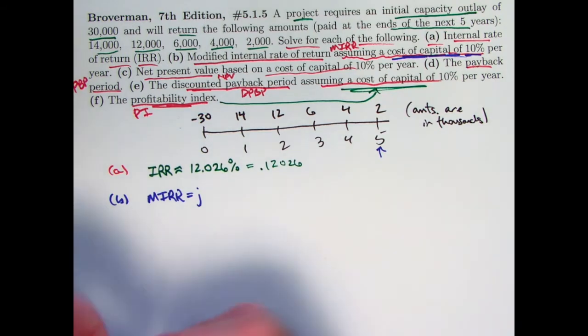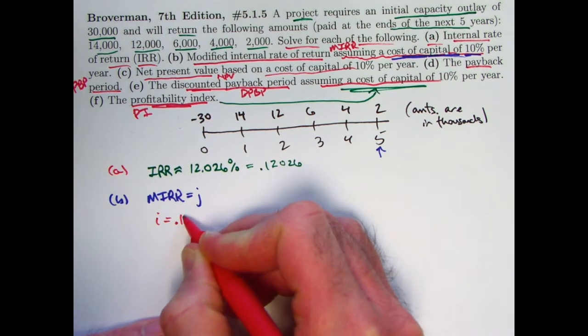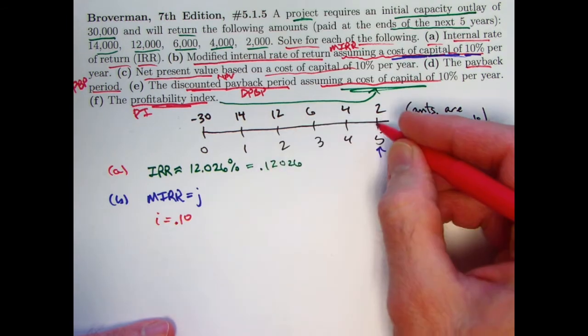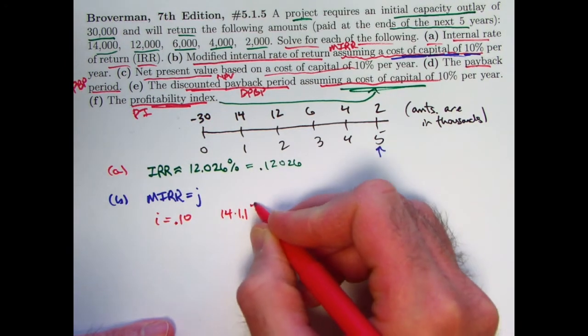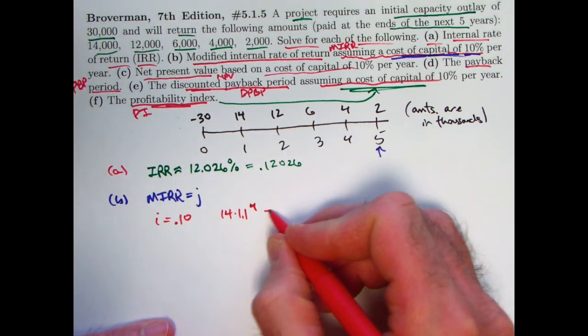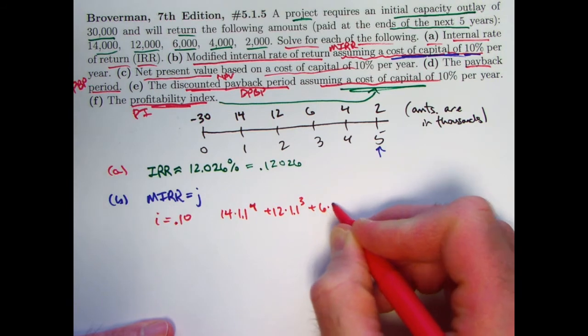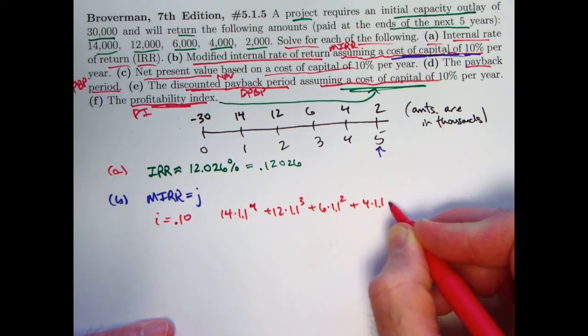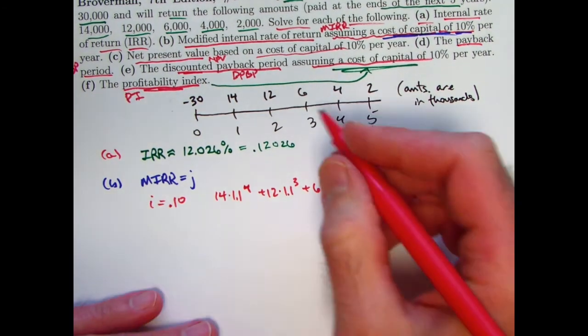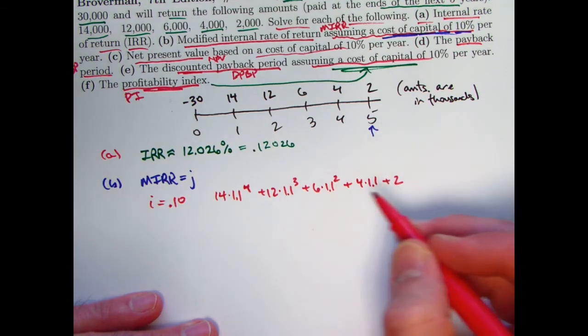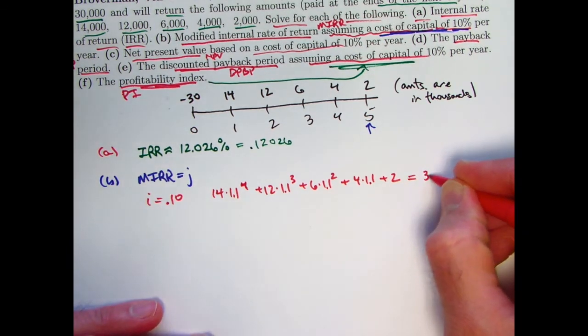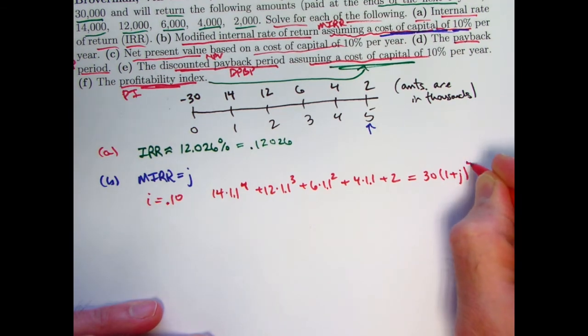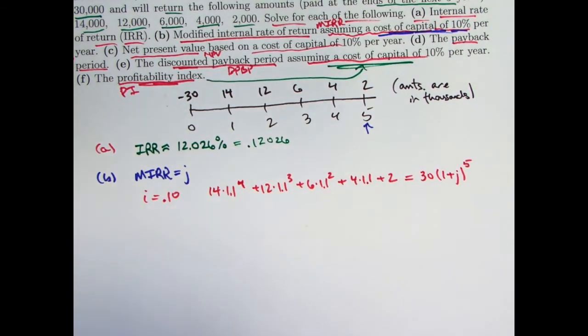So, again, we take the cost of capital to be 10%. I'll call that I, as the textbook does. And what we want to really compute here, then, first of all, the future value of these inflows at time five is going to be 14 times 1.1 to the fourth power, because it's got to go forward in time by four years, plus 12 times 1.1 to the third power, plus 6 times 1.1 squared, plus 4 times 1.1, plus 2. That's going to be the future value of these inflows to you at time five, based on an assumed cost of capital of 10%. And the question really is, what should J be so that 30 would accumulate to the same thing under compound interest over five years? You want to solve this equation for J. Okay? That's what it's all about. So that was kind of a long description of a fairly simple idea, actually.